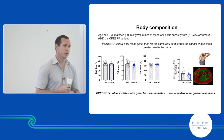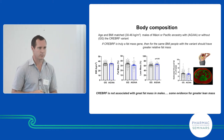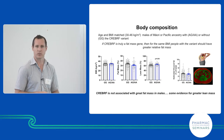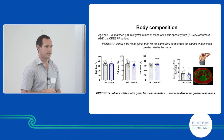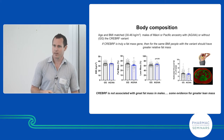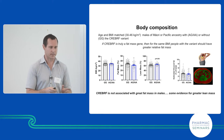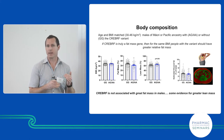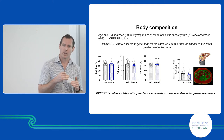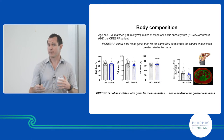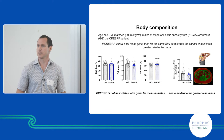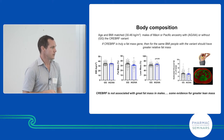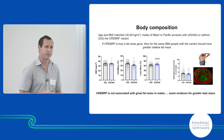We looked a little bit deeper at subcutaneous fat around the outside and visceral fat in the middle, and found very similar distributions between the variant groups. If you're storing fat mass viscerally around your organs, you're more likely to develop metabolic-related diseases, whereas subcutaneous fat under the skin can expand more and can even sometimes reduce risk. We found no significant difference in fat distribution between the variants.